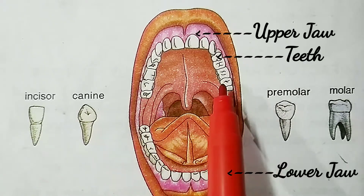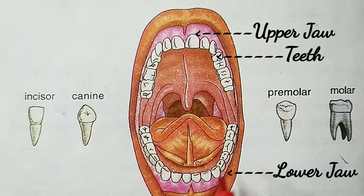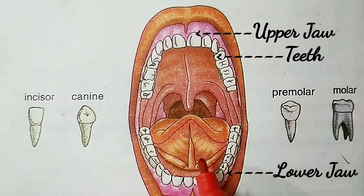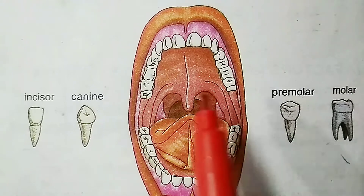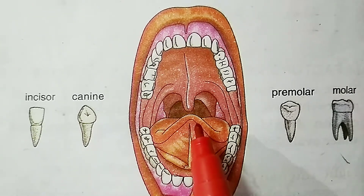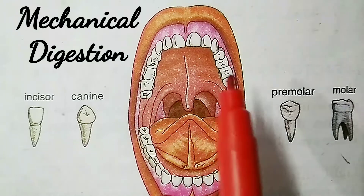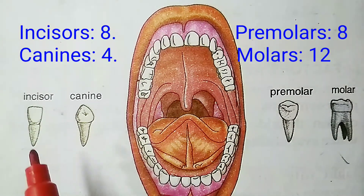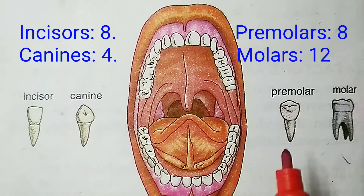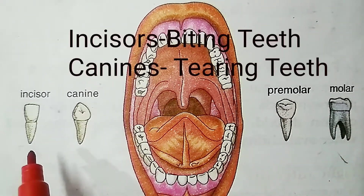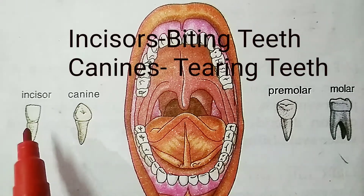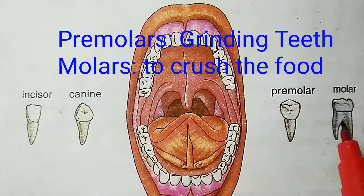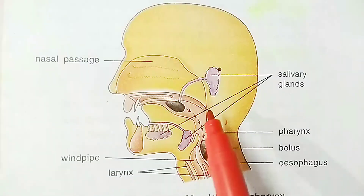The next part is the teeth. In human beings there are two jaws — the upper jaw and the lower jaw. The upper one is not movable but the lower jaw is movable. Both jaws bear teeth which are used to chew food into smaller pieces, a process called mechanical digestion. In human beings there are 32 teeth: 8 incisors, 4 canines, 8 premolars, and 12 molars. Incisors are biting teeth, canines are tearing teeth, premolars are for grinding, and molars are used to crush food.